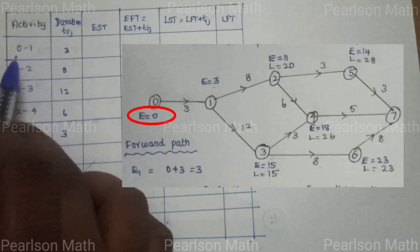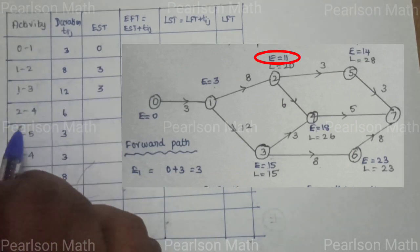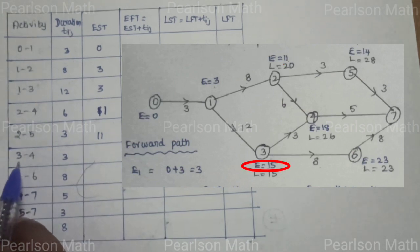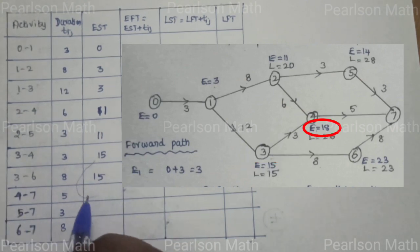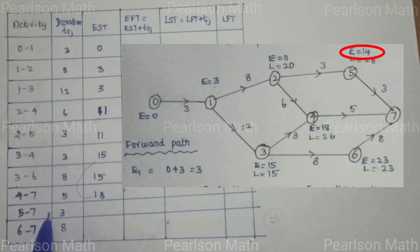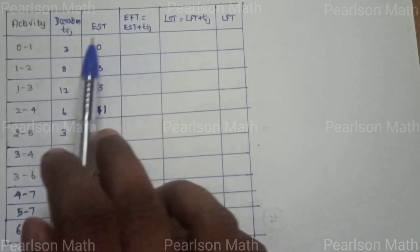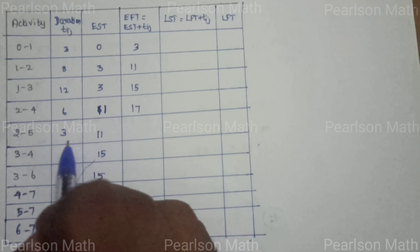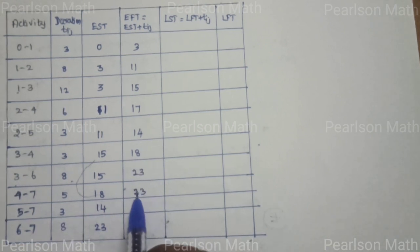Now we have the table. For activity 0 to 1, the earliest start time (EST) is 0, duration is 3, so earliest finish time (EFT) equals EST plus duration: 0 plus 3 equals 3. For 1 to 2, EST is 3, EFT is 3 plus 8 equals 11. For 1 to 3, EST is 3, EFT is 3 plus 12 equals 15. For 2 to 4, EST is 11, EFT is 11 plus 6 equals 17. For 2 to 5, EST is 11, EFT is 11 plus 3 equals 14. For 3 to 4, EST is 15, EFT is 15 plus 3 equals 18. For 3 to 6, EST is 15, EFT is 15 plus 8 equals 23. For 4 to 7, EFT is 18 plus 5 equals 23. For 5 to 7, EST is 14, EFT is 14 plus 3 equals 17. For 6 to 7, EST is 23, EFT is 23 plus 8 equals 31.